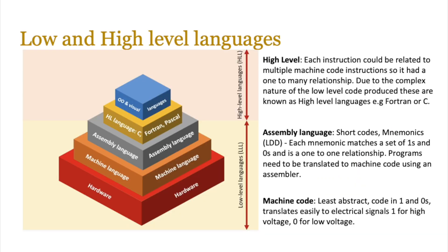We can divide languages into two categories initially: low and high-level languages. Hardware is the physical layer, and machine language and assembly language are the low-level languages that can run directly on the hardware. Machine language is very difficult to program in — it's basically binary. Assembly uses opcodes, operands, and mnemonics to interact with and customise applications, so it's a bit better, but still quite low-level.